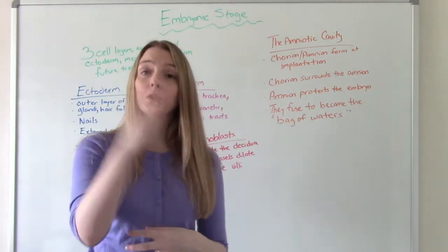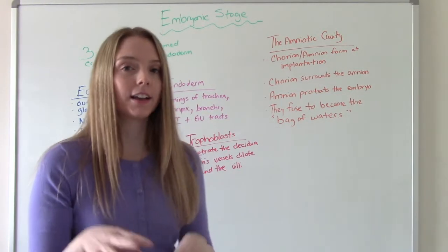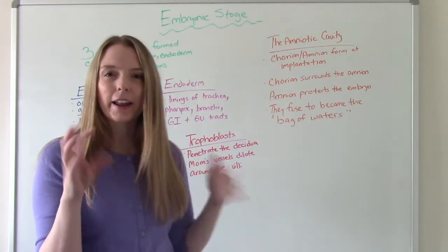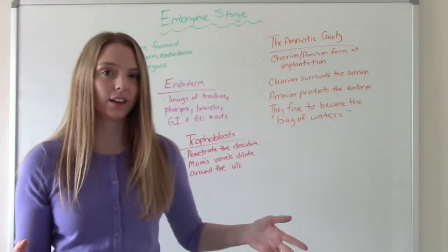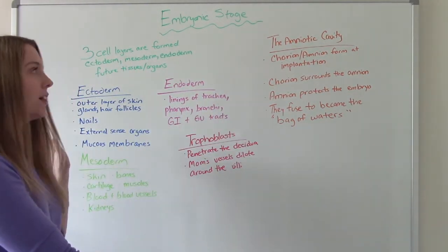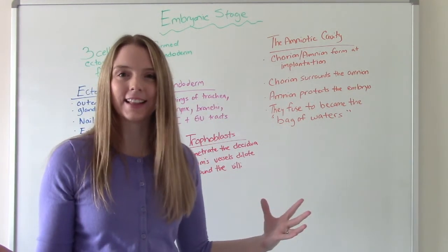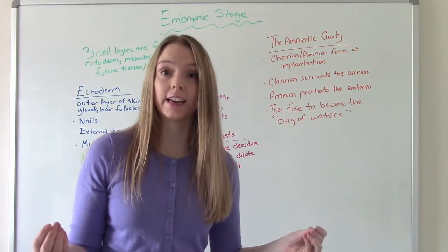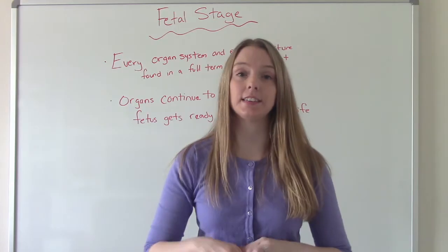I'll do another video on preeclampsia, but what happens in preeclampsia is this process gets disrupted — we don't have good penetration or mom's blood vessels don't dilate enough. But this is the embryonic stage, weeks two to eight — there's a ton going on. It's probably the most important stage in development of the baby.